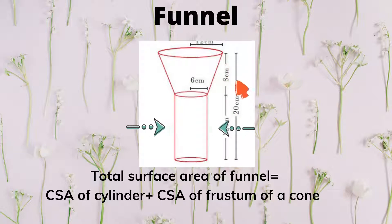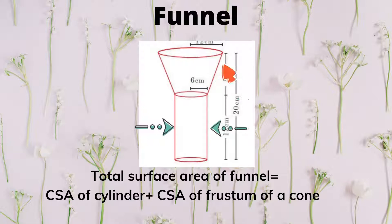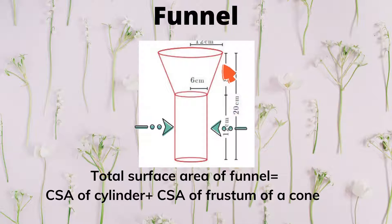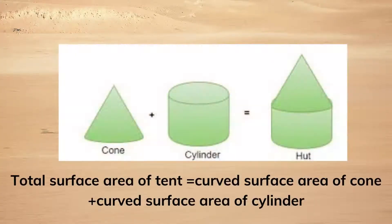Our next figure is a funnel. A funnel is made up of a cylindrical portion and a frustum of a cone. So the total surface area of a funnel is equal to the curved surface area of the cylinder plus the curved surface area of the frustum of a cone.